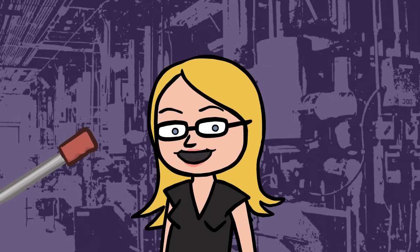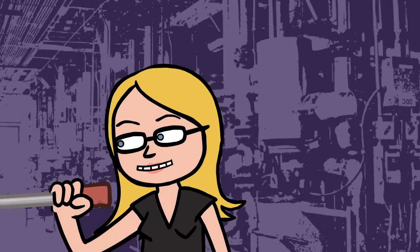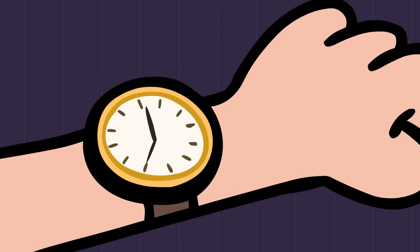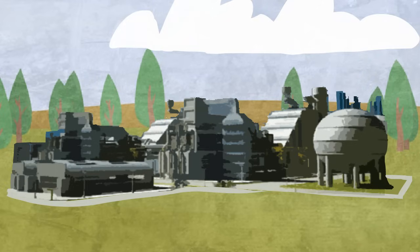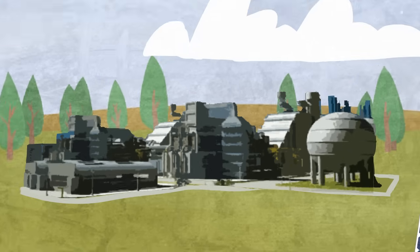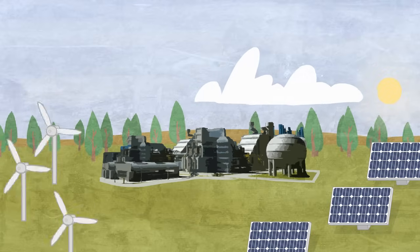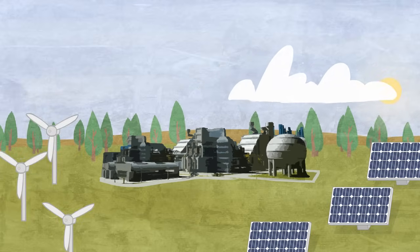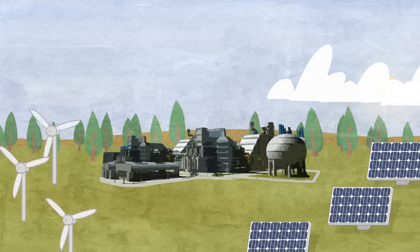Modern natural gas plants can get going in just 15 minutes. That makes them ideal for backing up renewables since they can switch on and off faster than most other conventional plants and partner with wind and solar energy as the wind changes or clouds move across the sky.